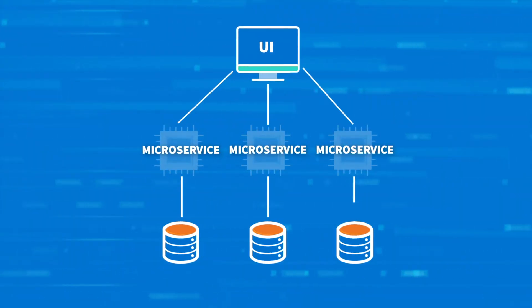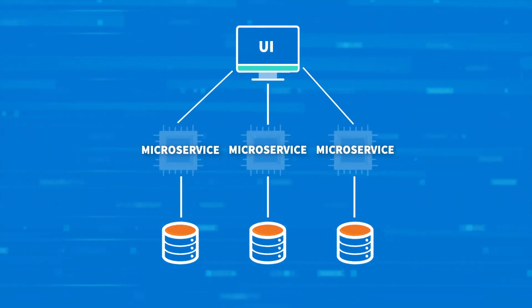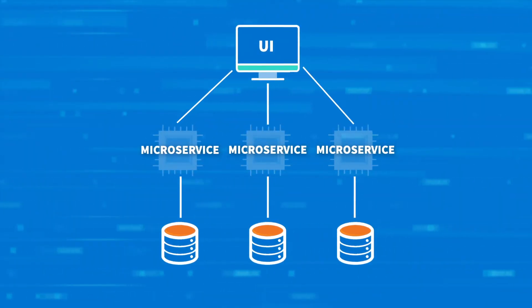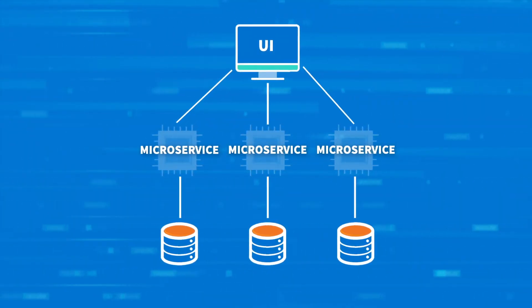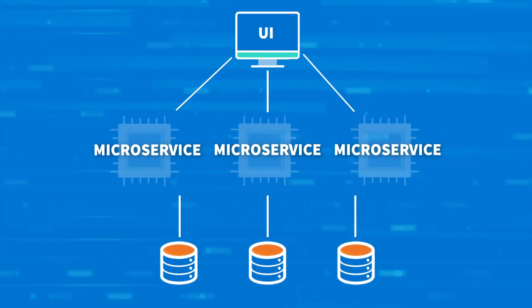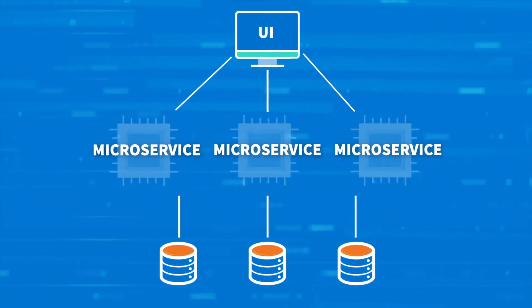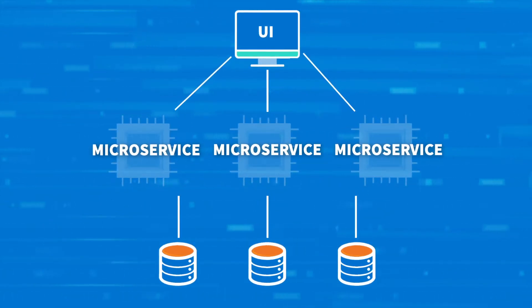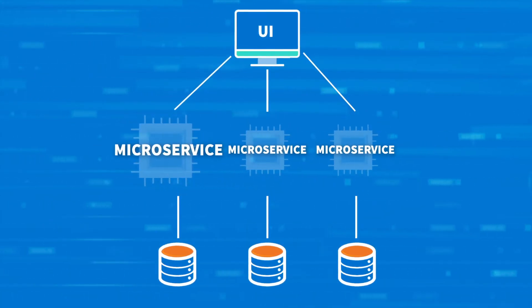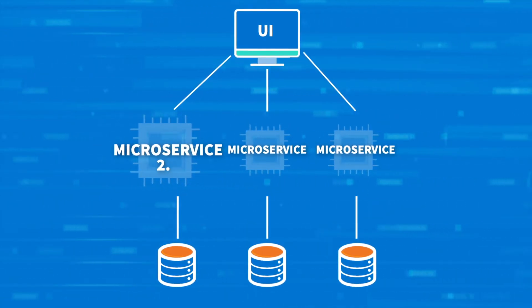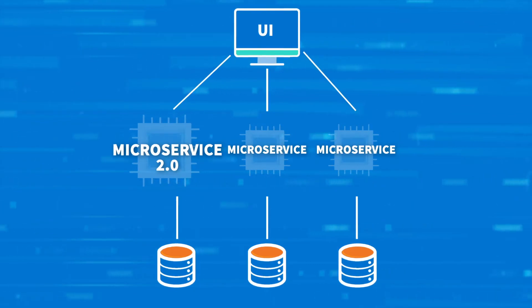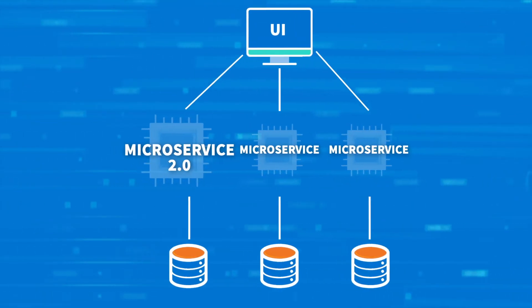The microservice architecture, or microservices, is a deployment approach in which a single application is composed of independently deployable smaller services. In other words, making changes to one service does not affect any of the others.